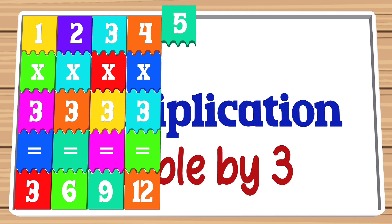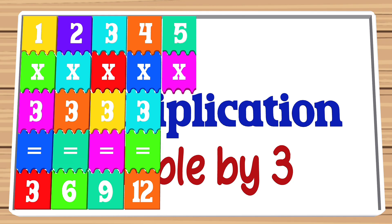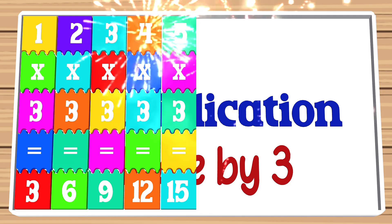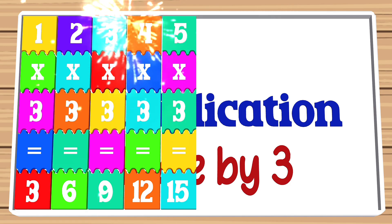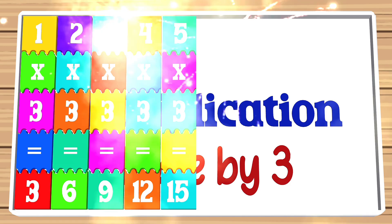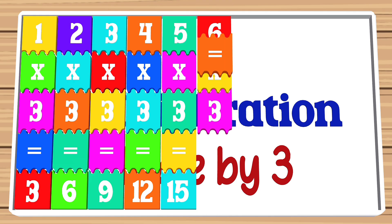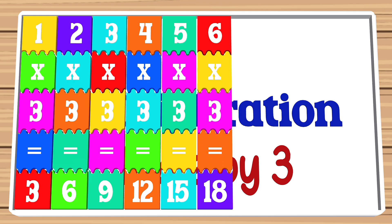5 times 3 is equal to 15. 6 times 3 is equal to 18.